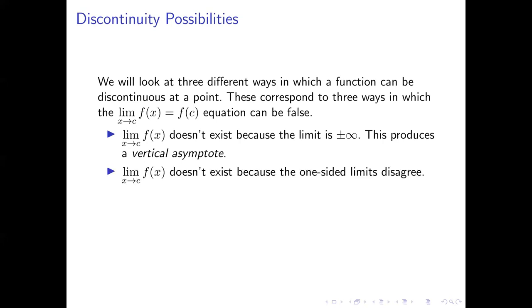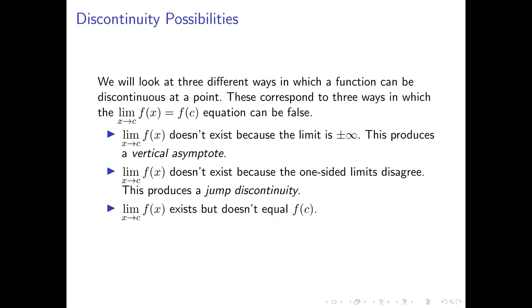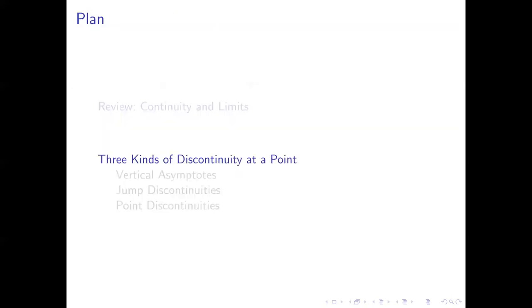The second possibility is that the limit doesn't exist because the one-sided limits as x approaches c disagree with each other. This gives us what's called a jump discontinuity. The third possibility is that the limit exists but doesn't equal the function value, and in that case we get what's called a point discontinuity. So let's take a look at each of these in turn, starting with vertical asymptotes.